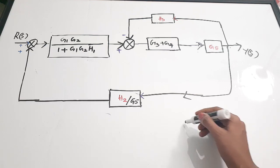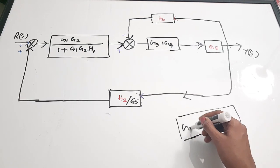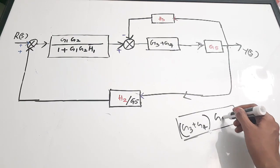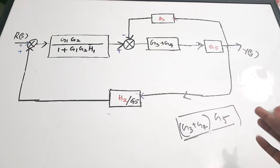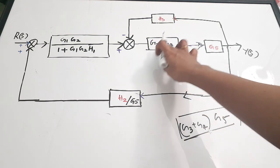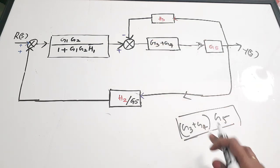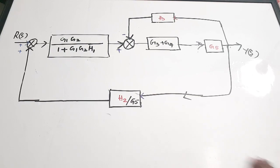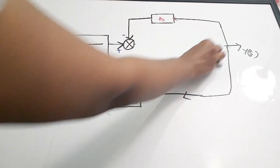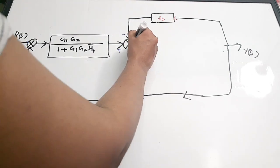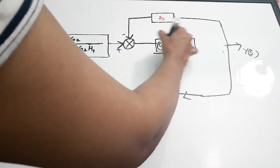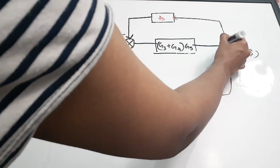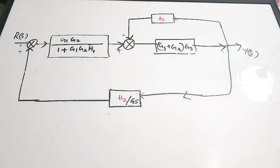Now looking at the two blocks together again — the G3+G4 block and G5 are cascaded — we can replace them with a single block G3+G4 multiplied by G5, since cascaded blocks have their gains multiplied. So we remove those two blocks and draw a single block (G3+G4)·G5.